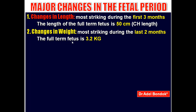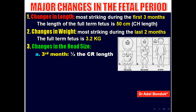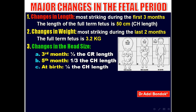There are also changes in head size. The relative head size gets smaller during development. During the third month, the head is half the crown-rump length. During the fifth month, the head is one-third the crown-rump length. At full term, the head size is one-quarter the crown-heel length.